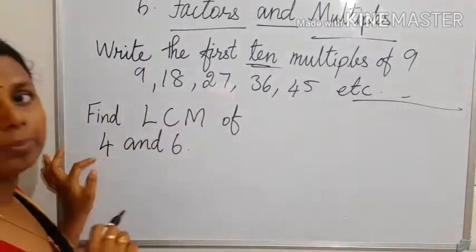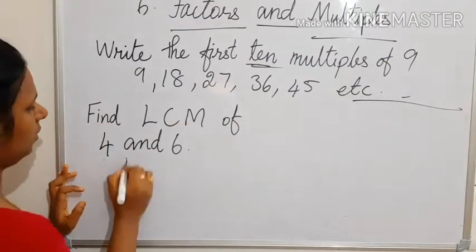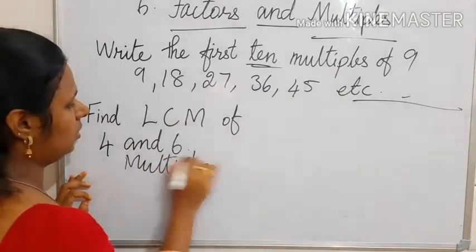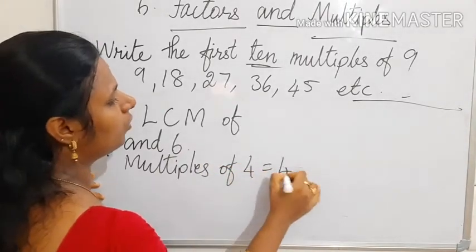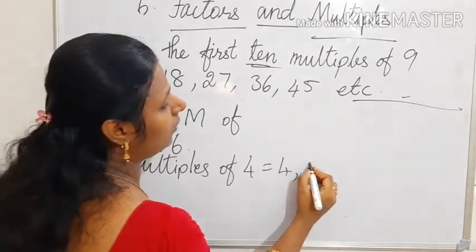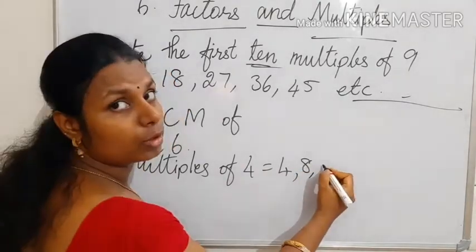Let us write multiples of 4. 4 ones are 4, 4 twos are 8, 4 threes are 12, 4 fours are 16, 4 fives are 20.